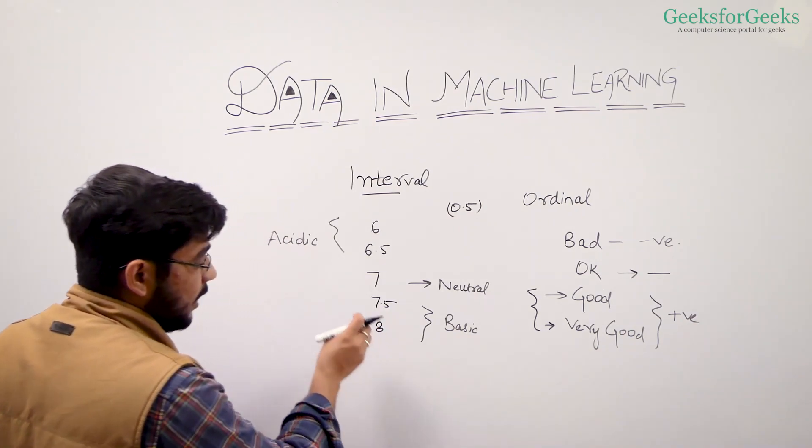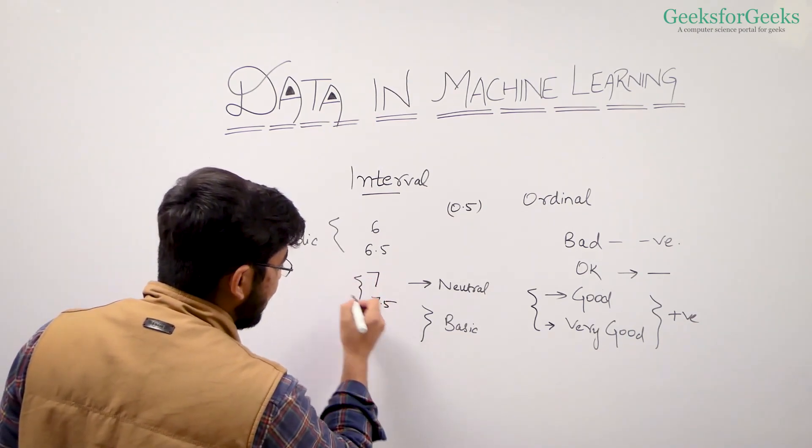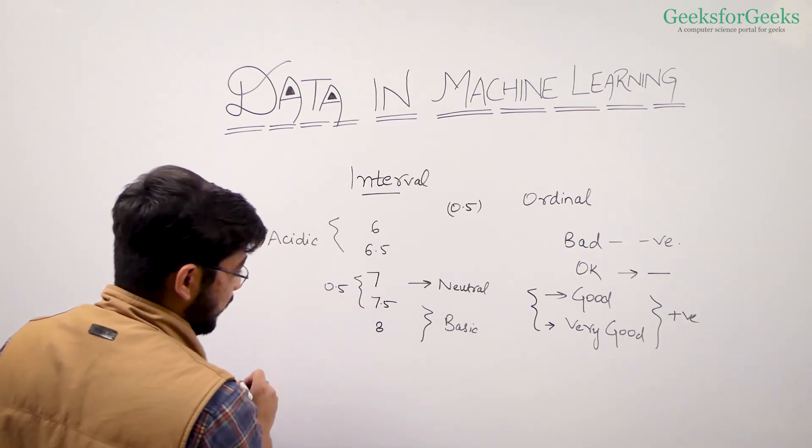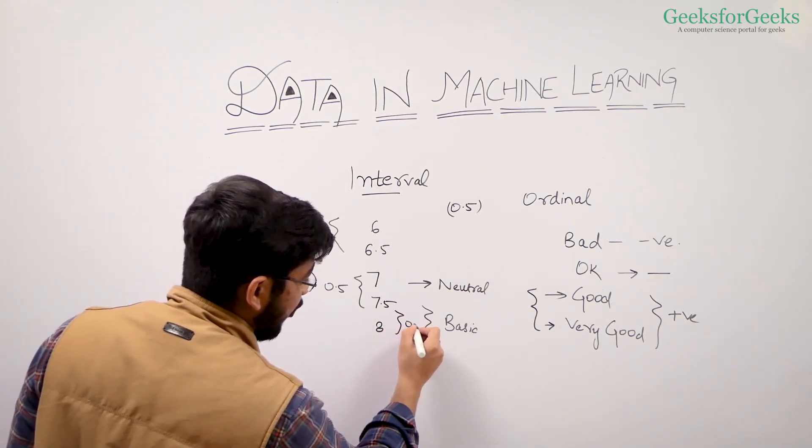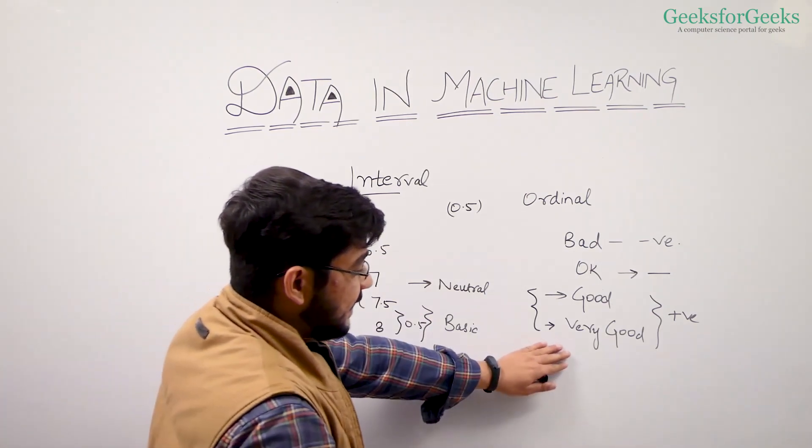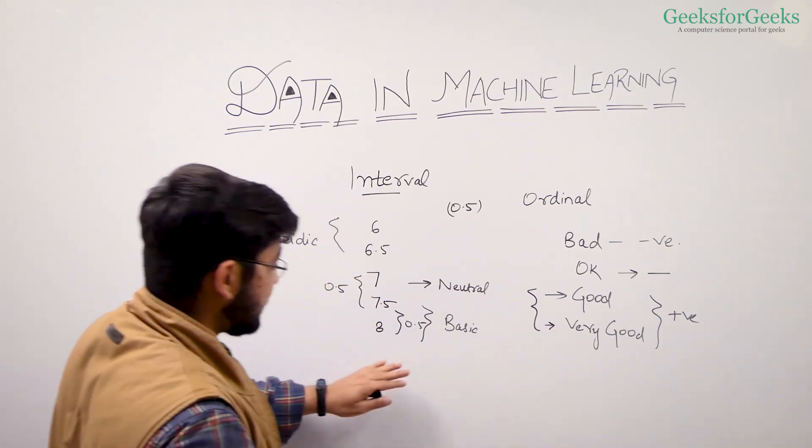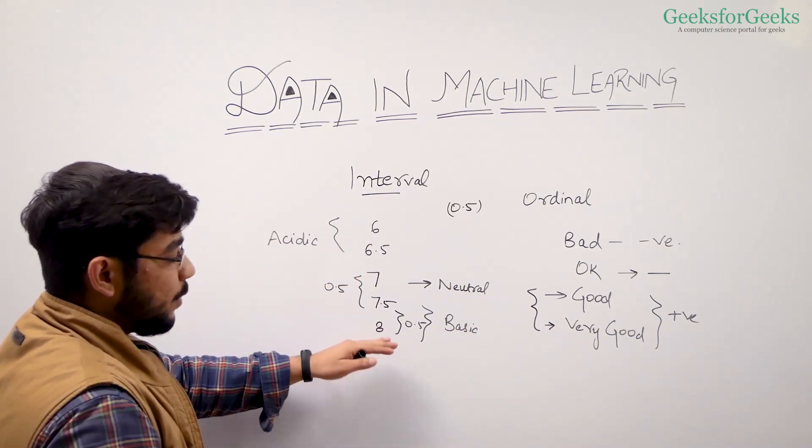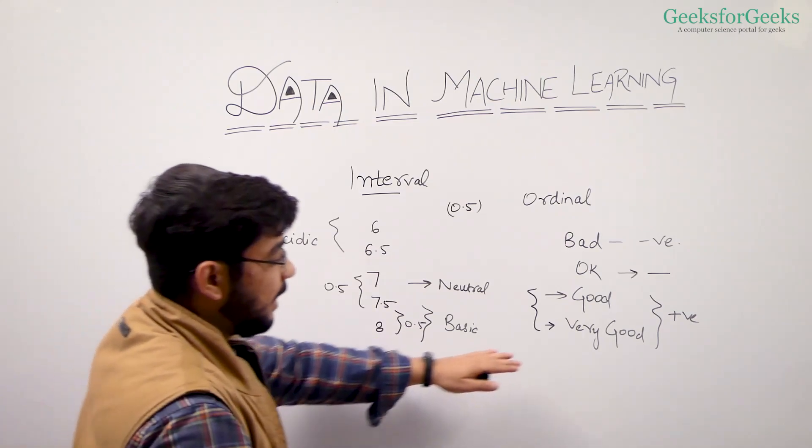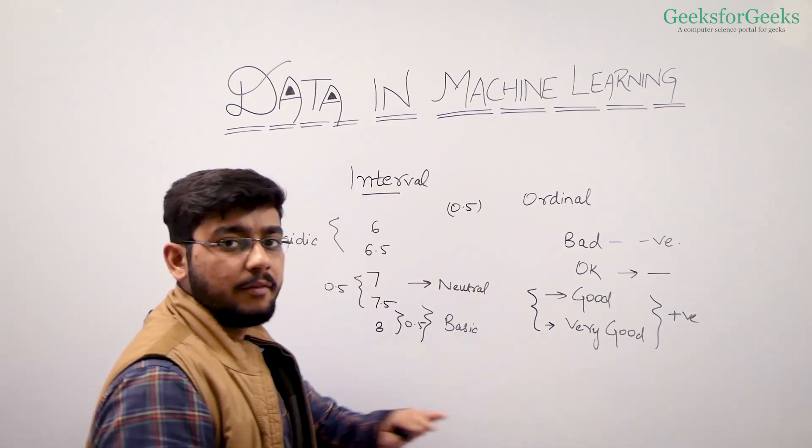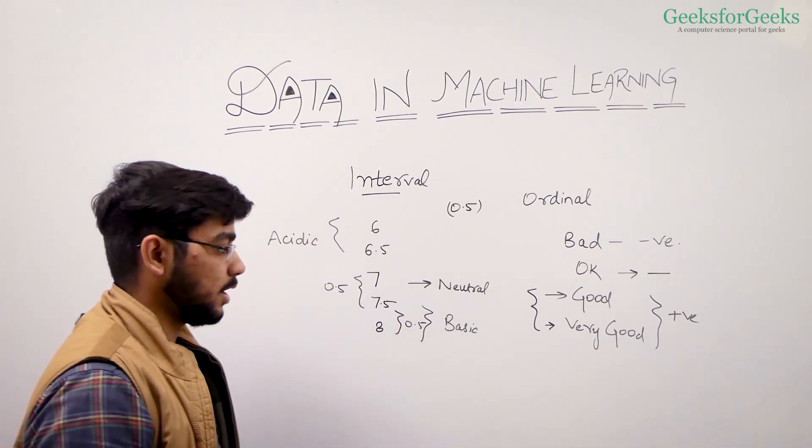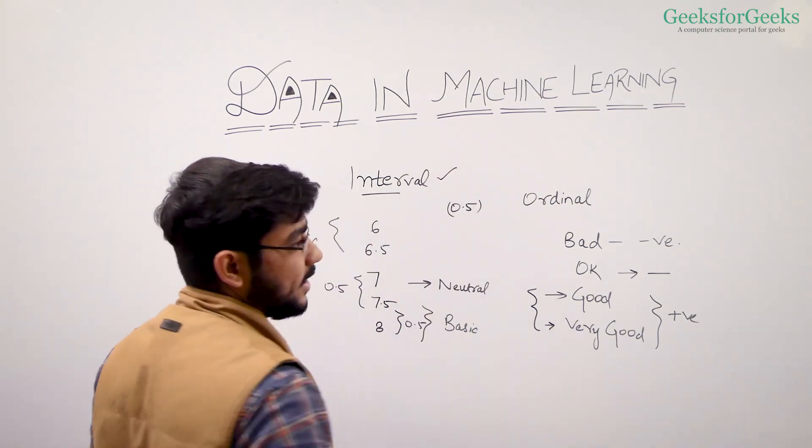In this case we know there is a clear difference of 0.5. But those ordinal examples were qualitative values. This is a quantitative value. We can define a clear interval, but in case of qualitative data we don't have any particular interval. So this was about interval data.